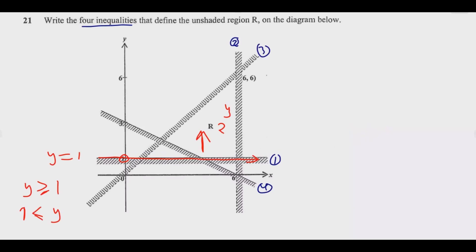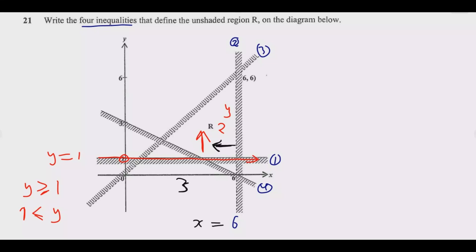Moving to line two, which is vertical. Because this line is vertical, regardless of the value of y, x remains 6 — no matter where you go up or down, x equals 6. We are looking for points in the region of interest, which are below x = 6, such as x = 3 or x = 5. Since this line is not part of the solution, the inequality is x < 6.